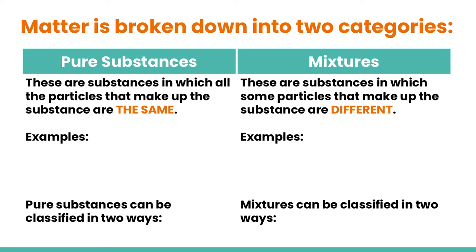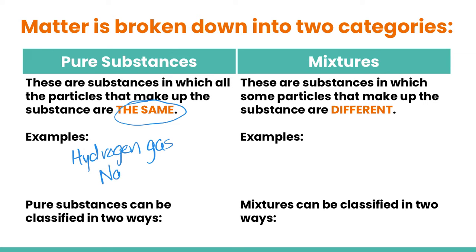Matter itself can be broken down into two categories. The first category is pure substances. These are substances in which all the particles that make up the substance are the same. For example, hydrogen gas is a good example of a pure substance, as is salt or NaCl — sodium chloride — as well as glucose, which we also know as sugar.